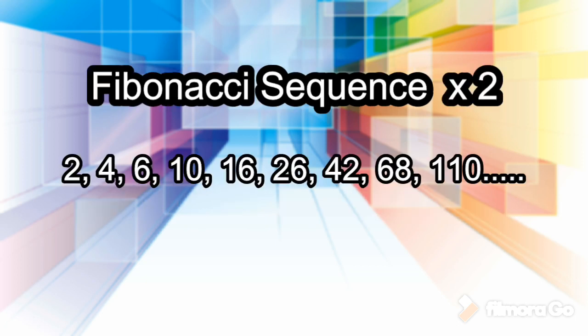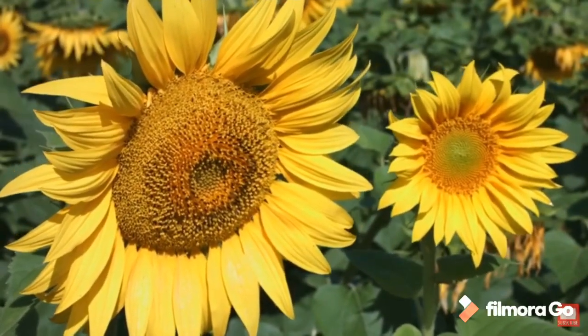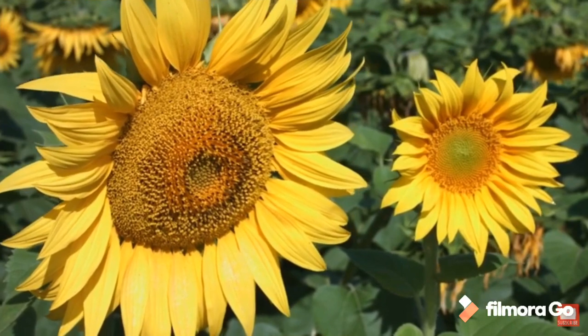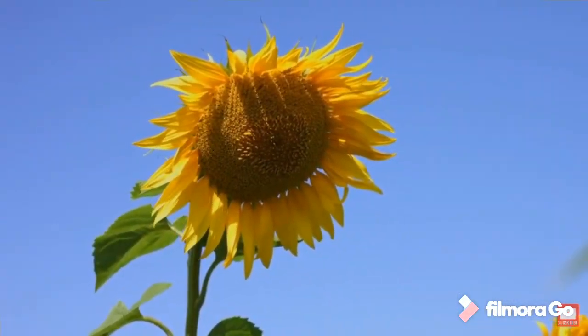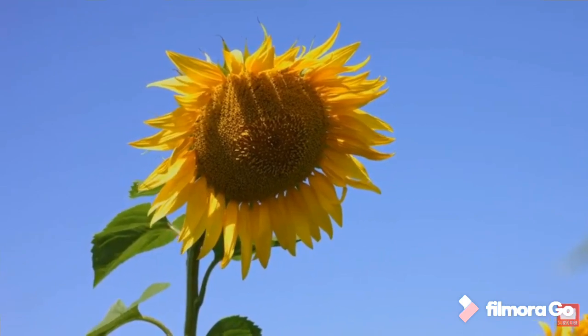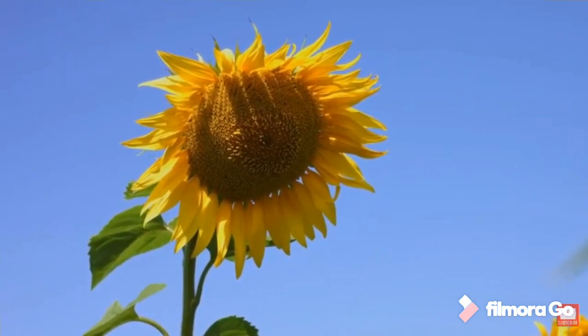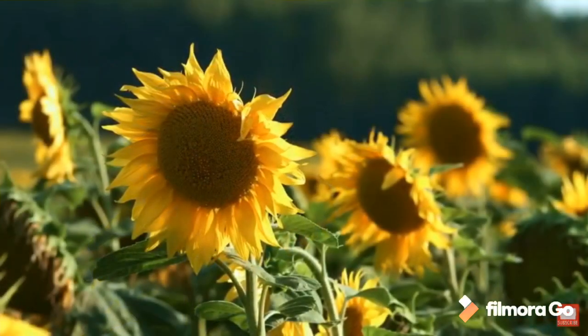If you double all the numbers in the ordinary Fibonacci sequence, you get 2, 4, 6, 10, 16, and so on, which also follows the rule that every number is the sum of the preceding two. The researchers found that another 6% of the individual spiral families had a number of spirals from one of these generalized Fibonacci sequences, and another 7% of spiral pairs were pairs of numbers from one of these generalized sequences.